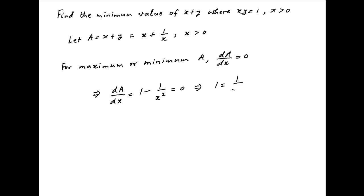Setting this equal to 0, we get x square is equal to 1, or x is equal to plus minus 1. But we are given that x is positive, therefore x is equal to minus 1 is ruled out.